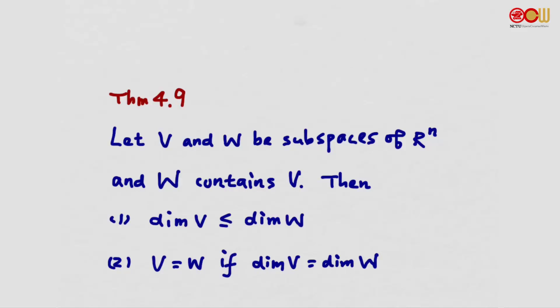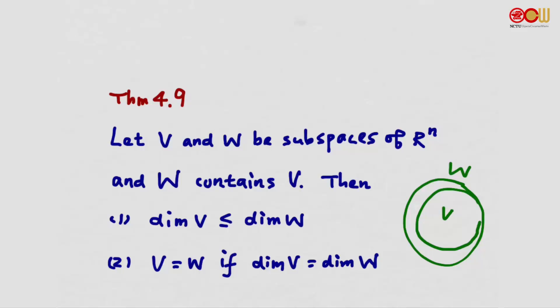One last result in this section: Theorem 4.9. If V and W are subspaces of R^n and W contains V, then first, the dimension of V must be less than or equal to the dimension of W — which is intuitive since V is inside W. Second, V equals W if and only if they have the same dimension; if they have the same dimension, we can immediately conclude they are the same subspace.